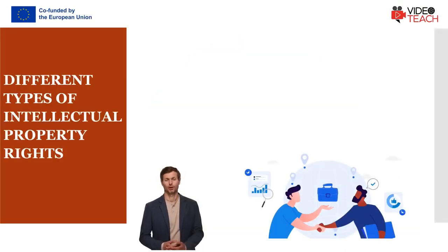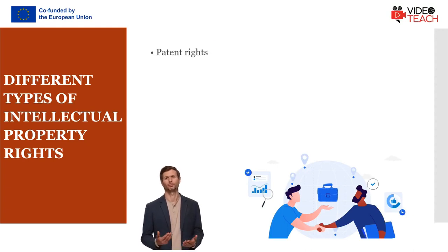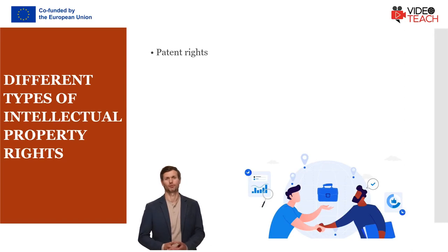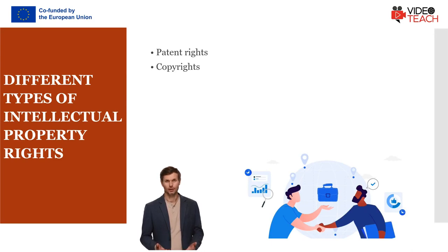Intellectual property rights come in many different forms, with the most common ones being patent rights. Patents protect new inventions and how they work. There are three types of patents: utility, design, and plant patents.